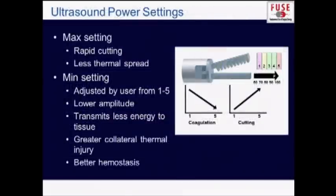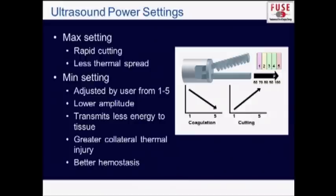The ultrasonic devices have a control where you can adjust the variable setting. At the max setting, the tip of the instrument vibrates as much as possible, resulting in rapid cutting. Because it cuts quickly, there's less time for thermal spread left and right in the tissues. If you want less rapid cutting but more coagulation, you can go to the minimum setting. Minimum setting means less excursion of the tip — it vibrates back and forth with a lower amplitude, transmitting less energy to the tissue. But because you generally keep the device applied to the tissue longer, it's going to cause greater collateral thermal injury. That's great for coagulation of a blood vessel and better for hemostasis, but if you are very concerned about lateral spread of energy, be careful with the min setting.